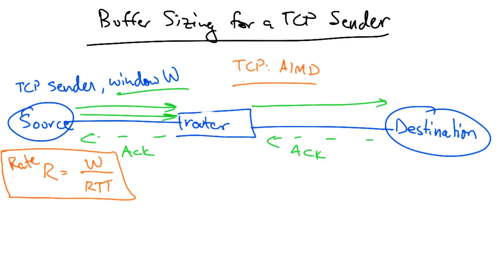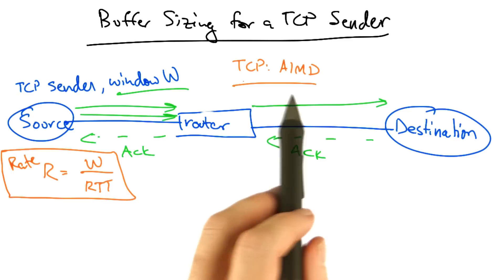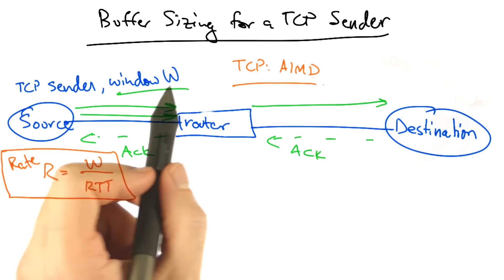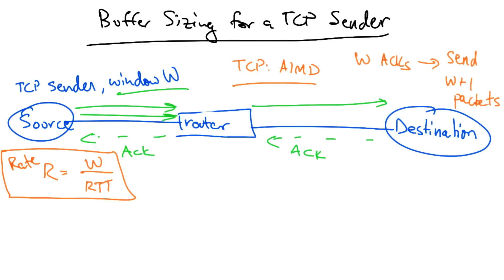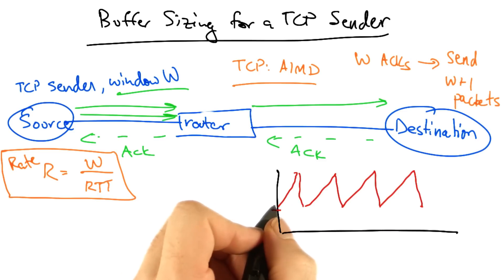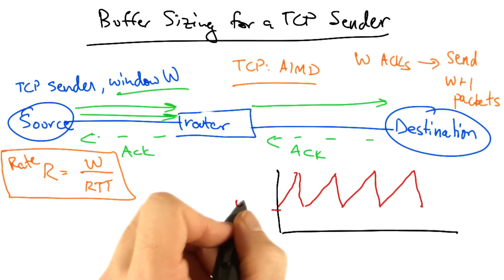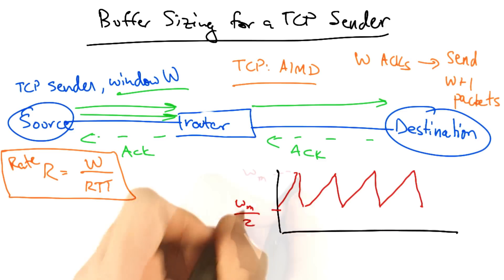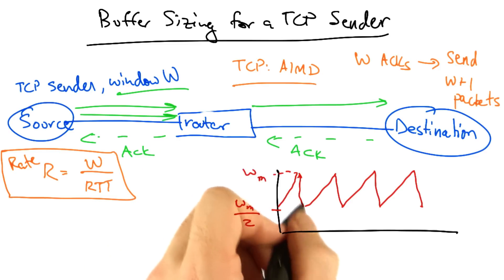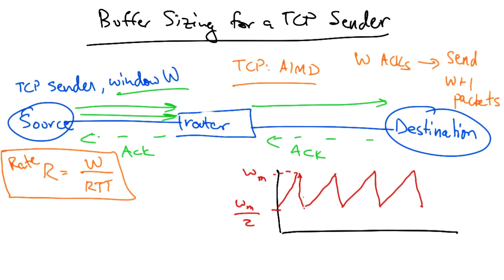Now remember that TCP uses additive increase multiplicative decrease, or AIMD congestion control. So for every W ACKs received, we send W plus 1 packets. And our TCP sawtooth will look something like this. We'll start at a rate W max over 2, increase the window to W max, and then when we see a drop, we will apply multiplicative decrease, and reduce the sender's sending rate to W max over 2 again.